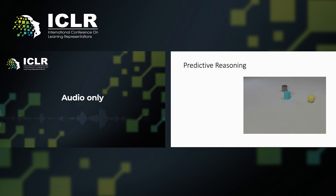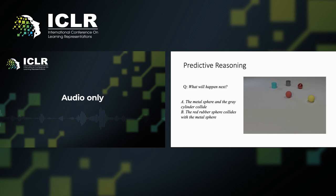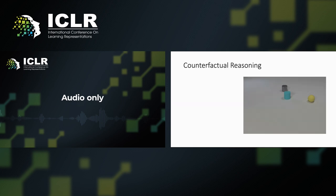Predictive questions query about future events after the video terminates. In this example, the metal sphere will keep moving along the white arrow and collide with the red sphere. Counterfactual questions require the model to imagine the outcome when an object is removed from the scene and select the event that will happen under the unobserved scenario.